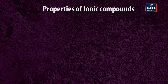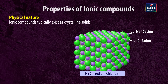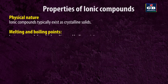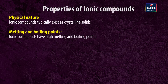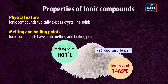Properties of ionic compounds. Physical nature: ionic compounds typically exist as crystalline solids. They are hard since the anions and cations are held together by strong electrostatic forces. Melting and boiling points: ionic compounds have high melting and boiling points. For example, the melting point of sodium chloride is 801°C and the boiling point is 1465°C.